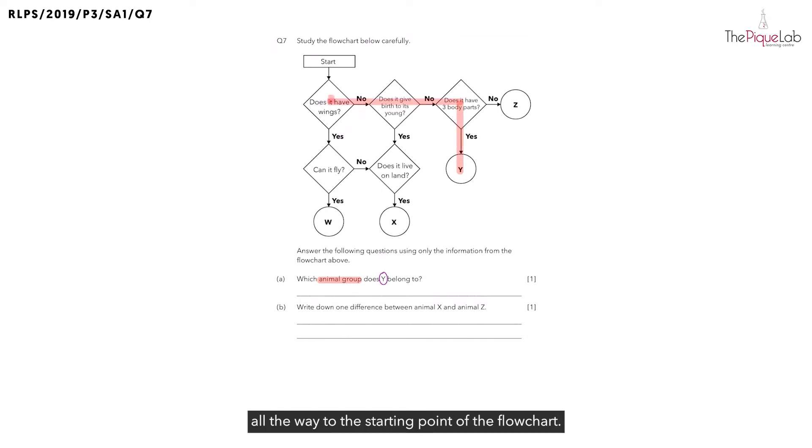I want you to highlight from Y all the way to the starting point of the flowchart. So from this highlighted path we can see clearly that there are three characteristics that animal Y has. But to identify which animal group does Y belong to, we have to look at which characteristics are unique. What does it mean by unique characteristics? Unique characteristics are simply characteristics that can only be found in that specific animal group.